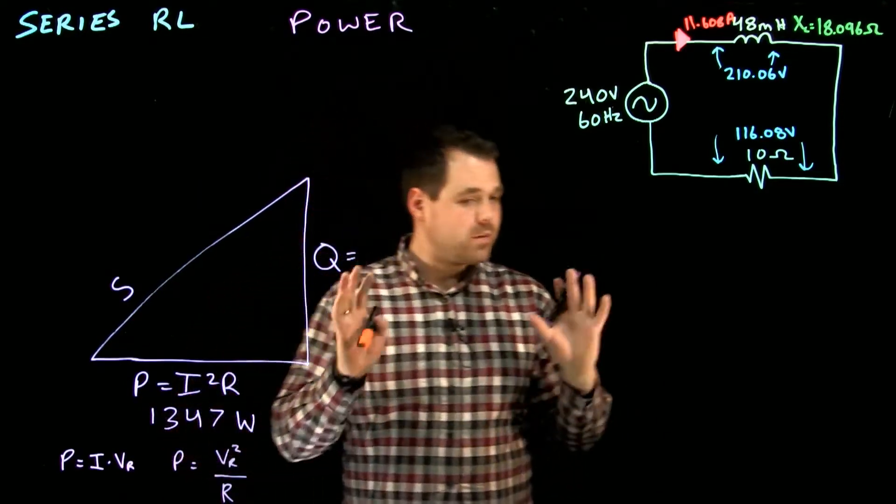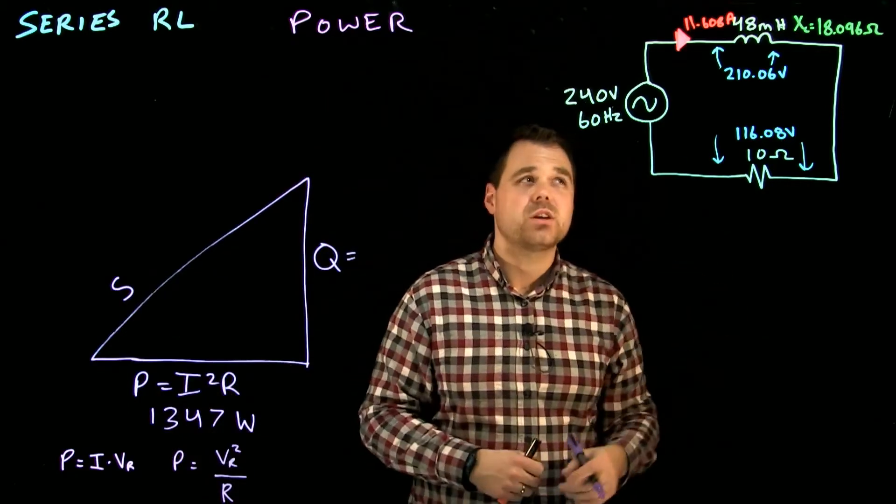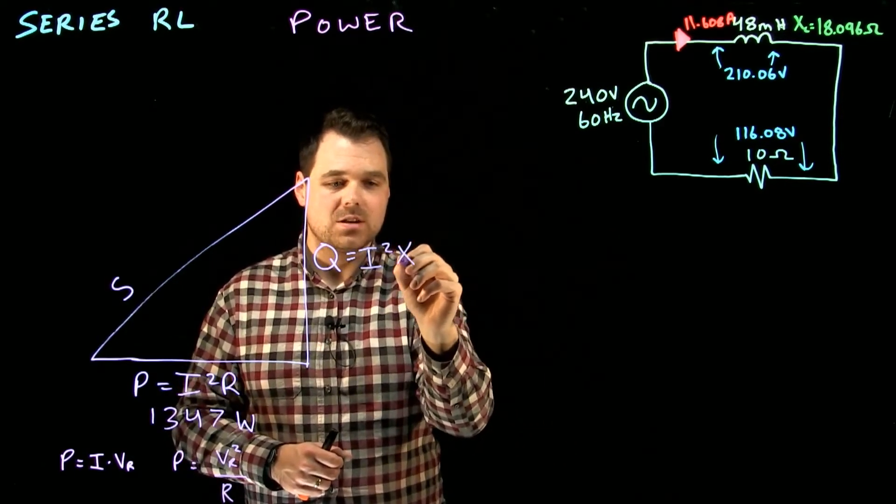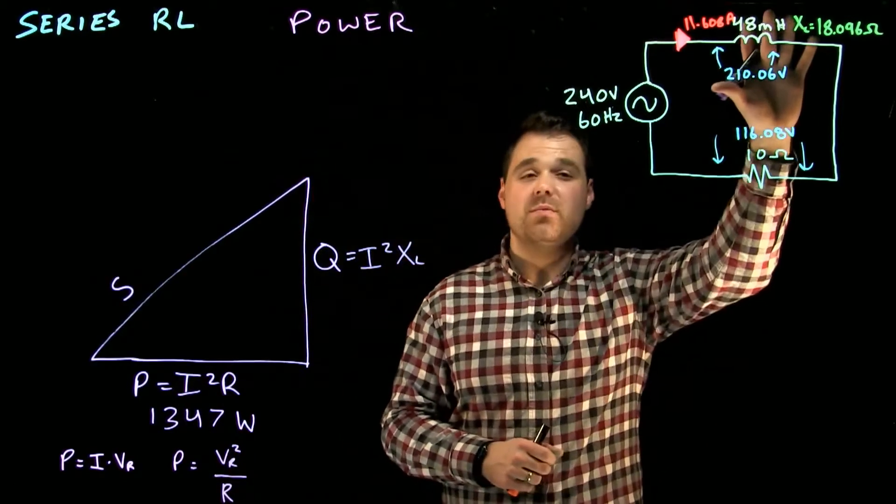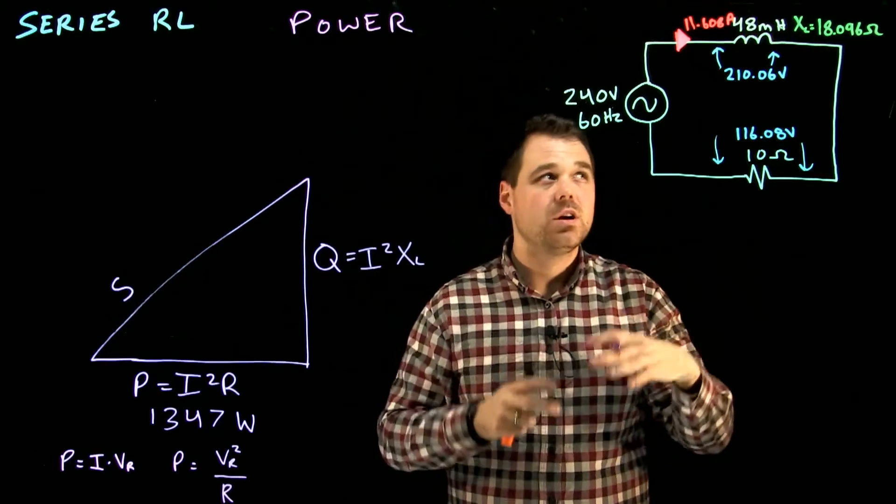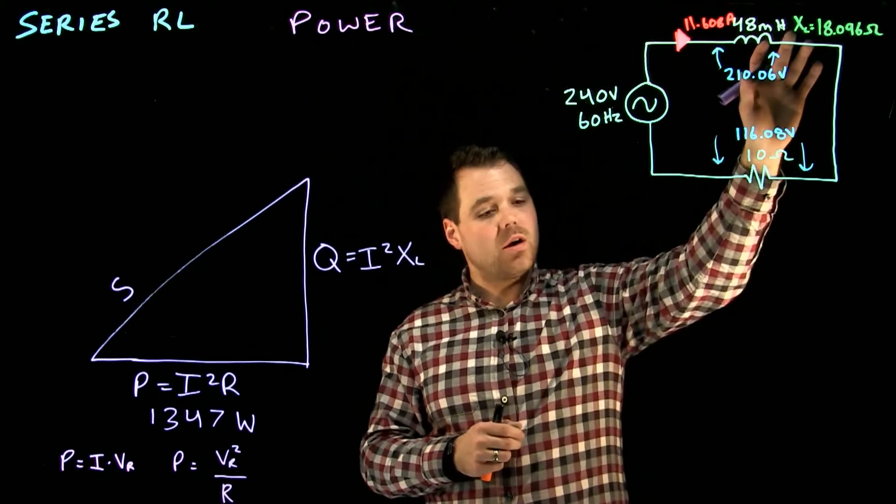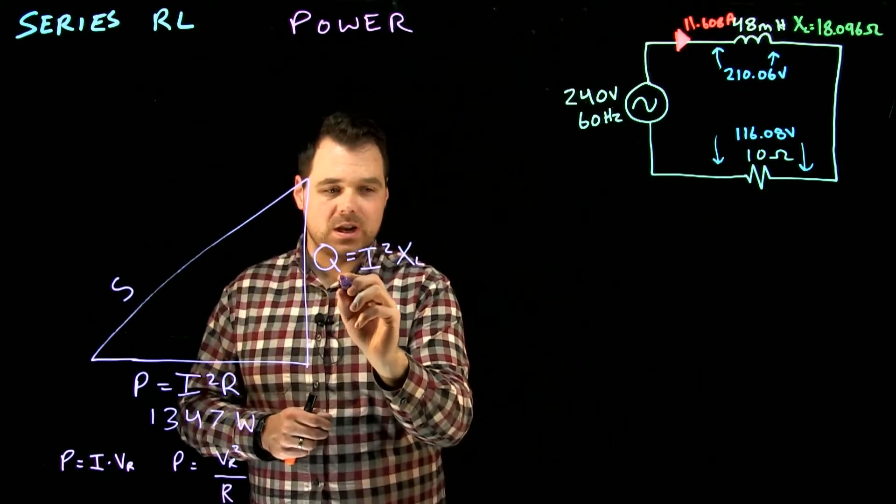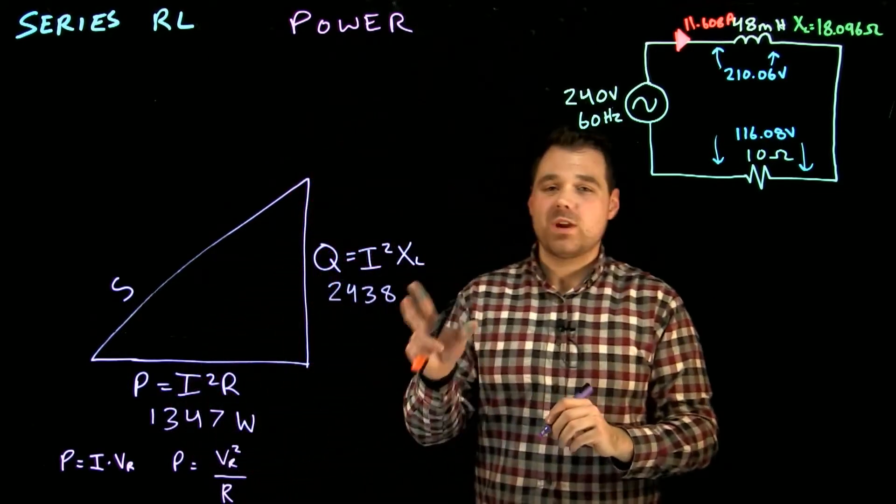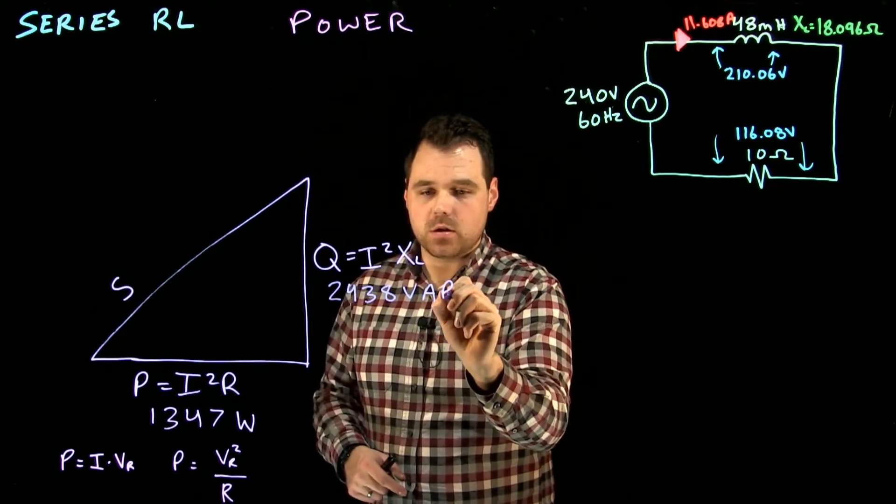My Q. Q is my reactive power due to my inductance or my capacitance in a circuit. I'm going to go Q equals I squared times XL in this case. It can only come from my reactive component. It can never be R. It can never be Z. It has to be my reactive component. So I go 11.608 squared multiplied by 18.096 ohms and I get 2438. Now reactive power. Remember it is measured in volt amp reactive.